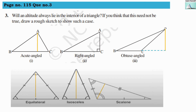Question number three: will an altitude always lie in the interior of a triangle? If not, draw a rough sketch to show such a case. Here I have shown six different triangles — based on angle: acute, right, and obtuse; based on sides: equilateral, isosceles, and scalene. For the acute angle triangle, altitude AE is inside the triangle, in the interior region. So the acute angle triangle is one case where the altitude is inside.